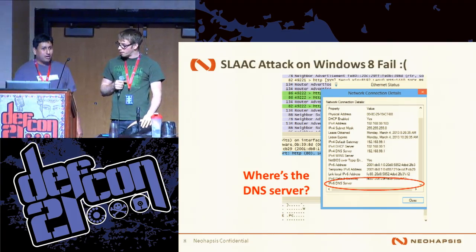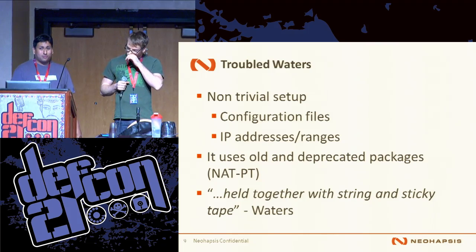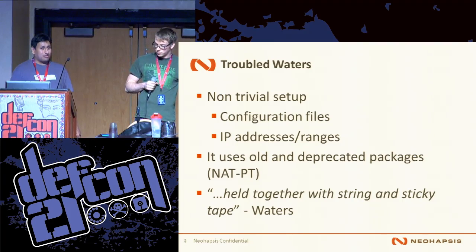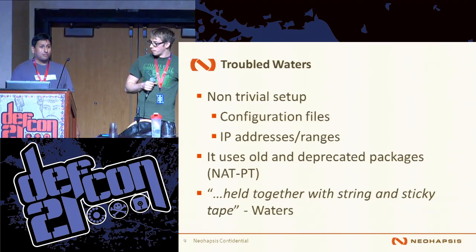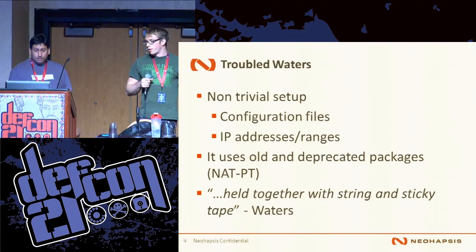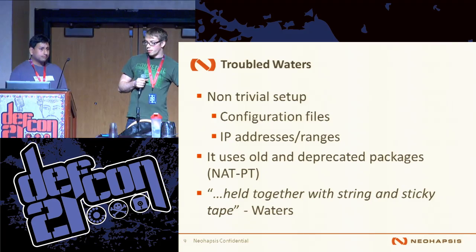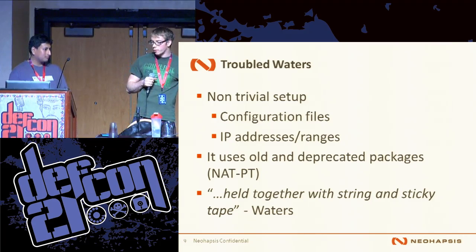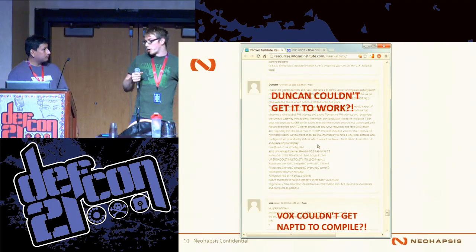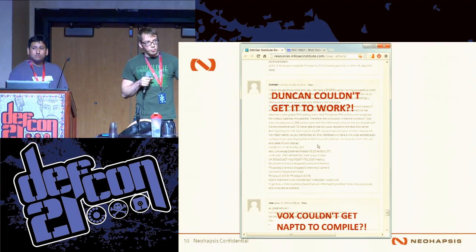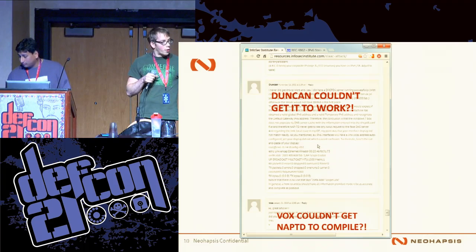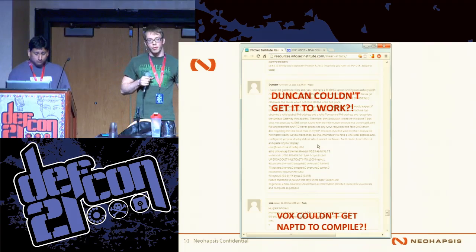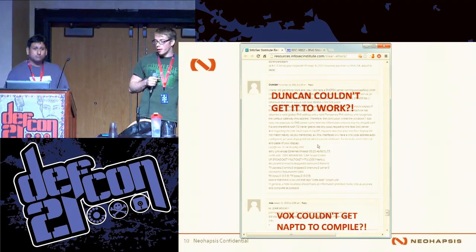There are some other issues with the guide that Waters put together. There are a lot of configuration files to edit — the steps were detailed but there's still a lot to go through: many IP addresses and ranges to keep track of, lots of configuration flags, and it used a lot of old and deprecated packages. He basically held it together with string and sticky tape, which is pretty parallel to what we actually experienced in the lab. We went back to the blog post wondering if we were the only ones having problems. Reading through the forums, this guy Duncan couldn't get it to work, Vox couldn't get a particular package to compile. It was definitely too complicated for something we thought could be an awesome weapon on penetration tests.